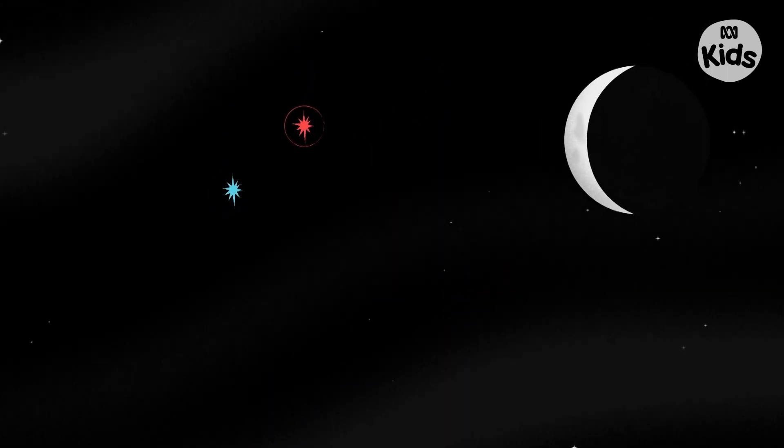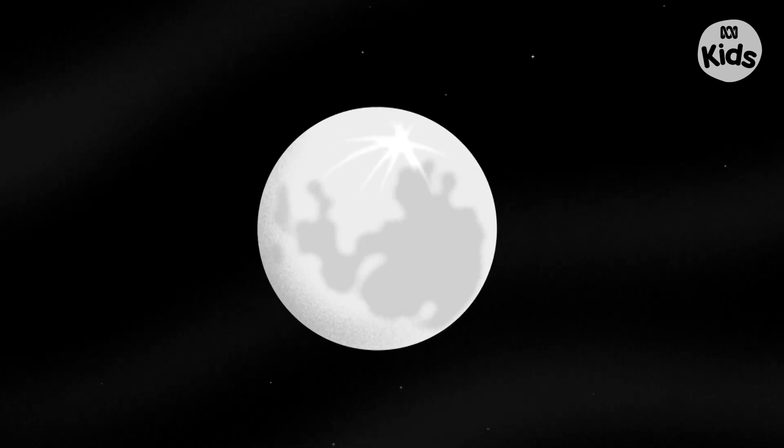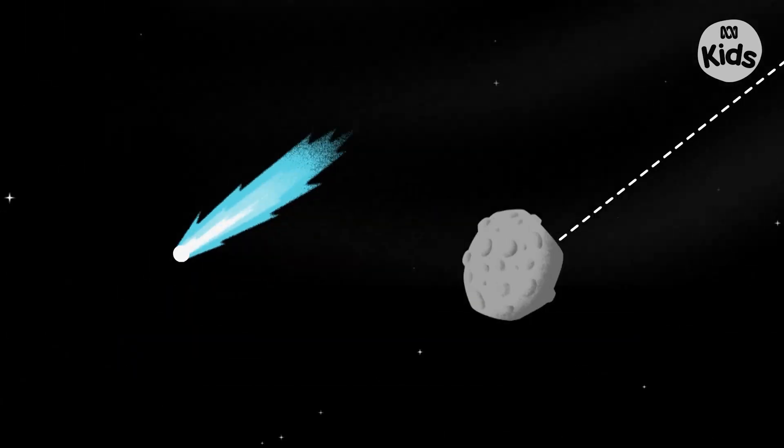Astronomers watch the sky and try to figure out why things look the way they do. Why some stars are blue and some are red. Why the moon looks like it changes from a fingernail in the sky to a whole circle, or why comets have tails but asteroids don't.